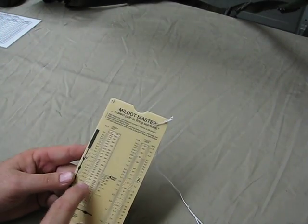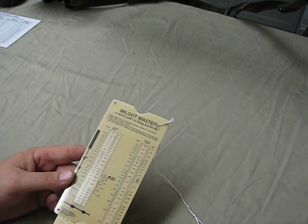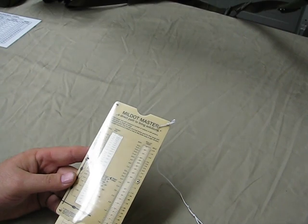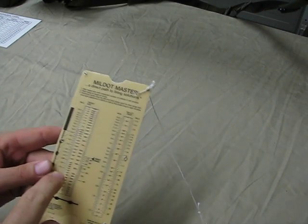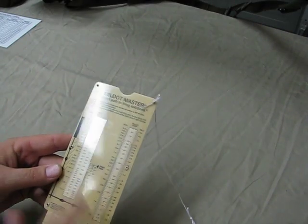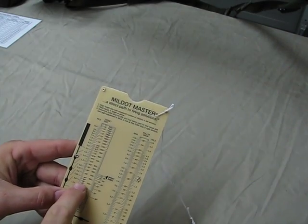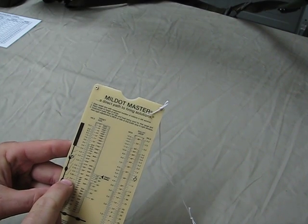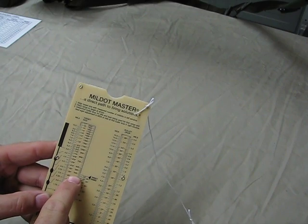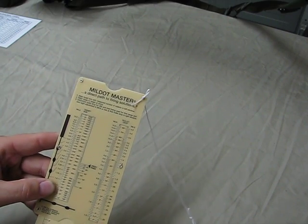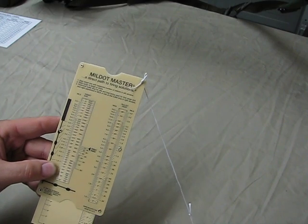You basically look on here, see 36 inches, take 36 inches, slide it down to where it says 2 mils right there. So you have a 36 inch target measured at 2 mils, your target is 500 yards away. Awesome, it can't be any easier than that. This thing is fantastic.